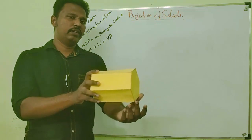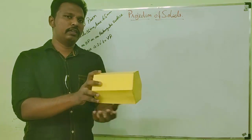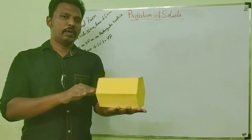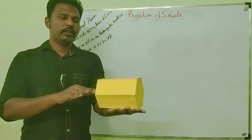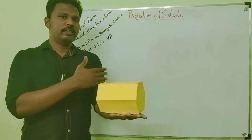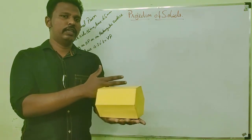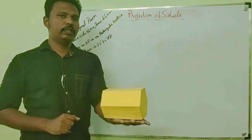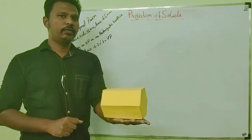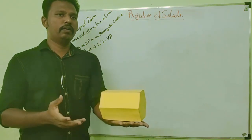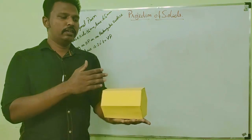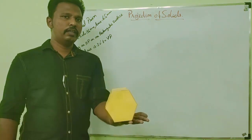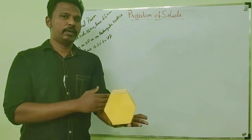As it is resting on HP with one of its rectangular surfaces, the axis is parallel to HP. Now the axis is inclined to VP with an angle of 30 degrees. So the first step in simple projection is we have to make the inclination perpendicular. Here the axis inclination is 30 degrees to VP, so we have to make the axis perpendicular to VP.